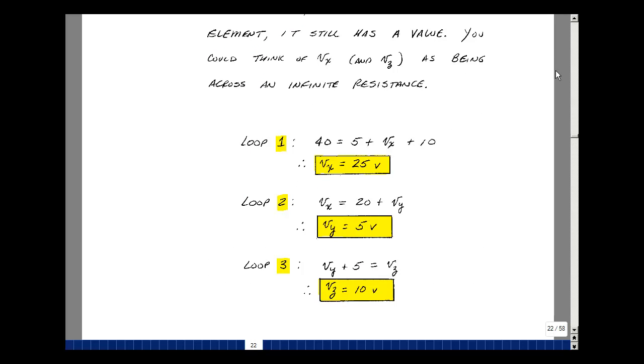So from our first loop equation, we have then that 40 minus 10 minus 5 is V sub x, or 25. Our second equation, we have V sub x in terms of 20 and V sub y, but we already found V sub x, so then we can solve for V sub y. This is going to be 25 minus 20, or 5. And then lastly, our third equation, we had V sub y plus 5 is equal to V sub z, but V sub y is equal to 5, so V sub z is equal to 10.